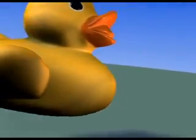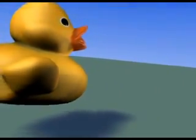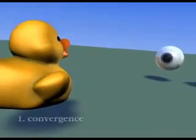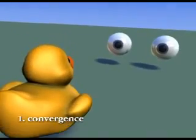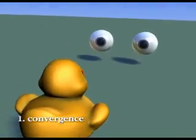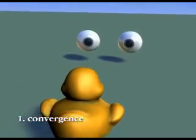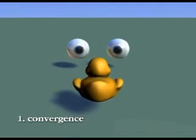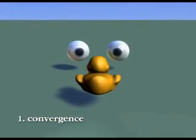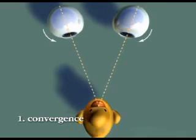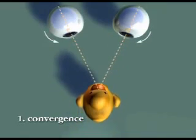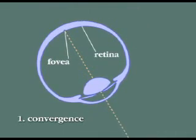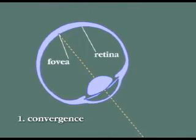First, as an object approaches, both eyes track it in a process called convergence. The size of the eyes in this example has been greatly exaggerated so that the subtle movement that takes place during convergence can be seen. Convergence of the eyes keeps the image of the object of interest centered on the fovea, the part of the retina where resolution is highest.